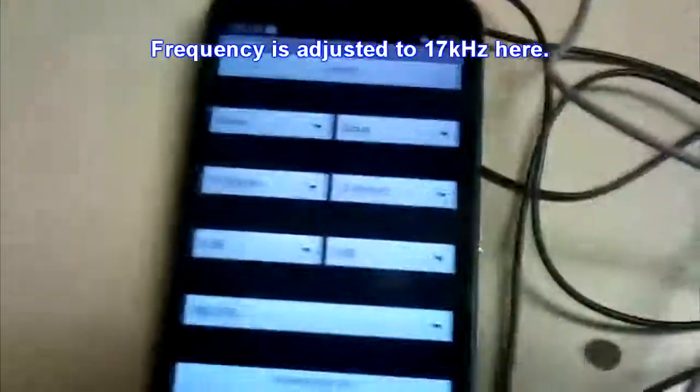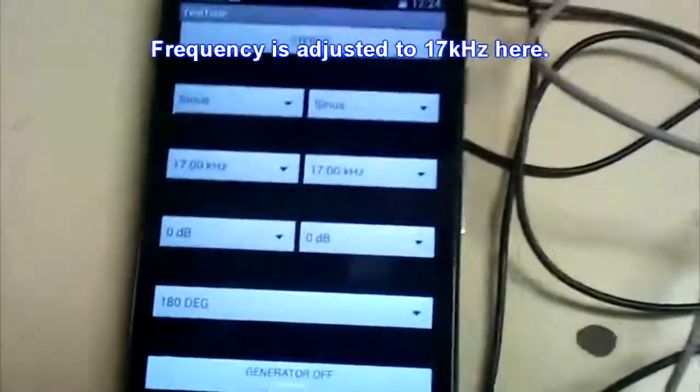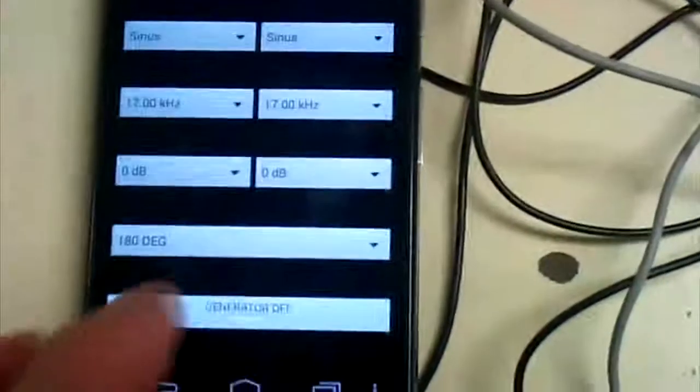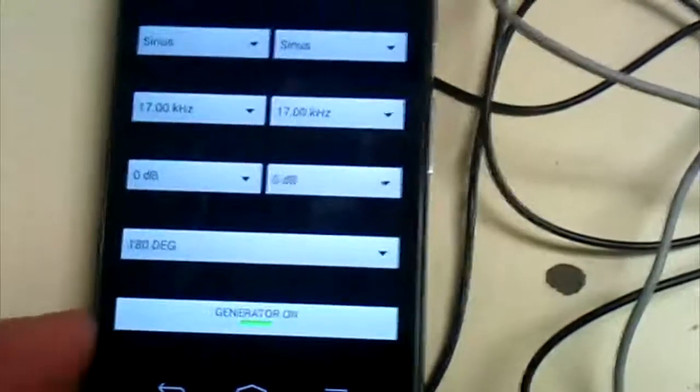So let's turn that thing on. It's adjusted to 17kHz here. You see it's 180 degrees shifted, both outputs. Output voltage is now 2.99V or 3V and the current also is 3mA.